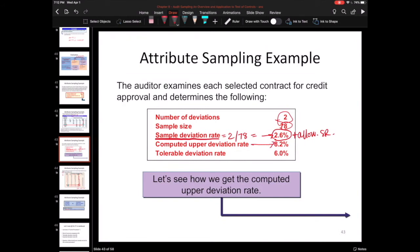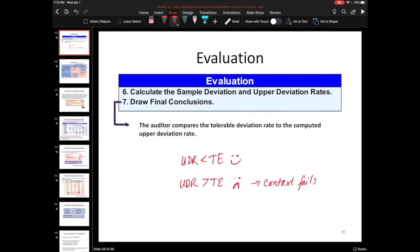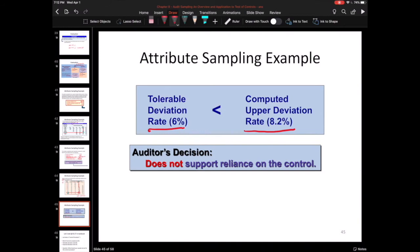Now that will be compared back to your tolerable deviation rate of 6%, which again, this was given at the beginning of the problem. And in order to figure out if you can rely upon this control or not, you compare your computed upper deviation rate, which was 8.2, to your tolerable deviation rate, just like we talked about on this slide. And we see because the computed upper deviation rate is bigger than tolerable, in other words, our worst case scenario for this control is more than what we can tolerate, we are not happy and we basically say, okay, the results of this test say I should not rely upon this control.